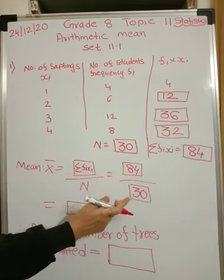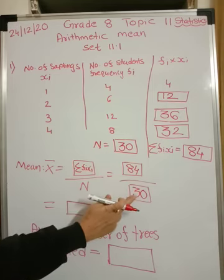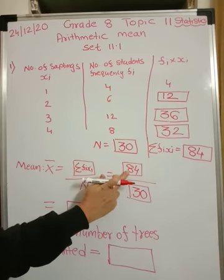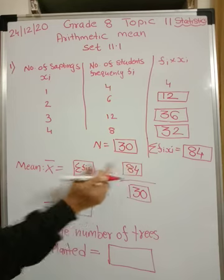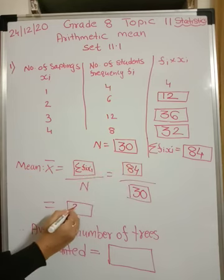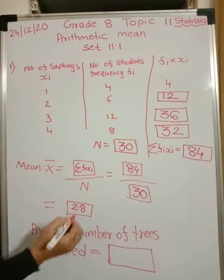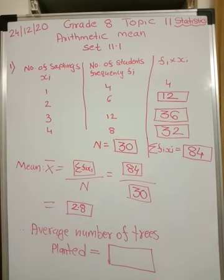If we calculate this, 84 is divisible by 3. 3 2's are 6 and 8's are 24. So 28 upon 10. It comes out to be 2.8. So average number of trees planted by each child you can say approximately 2.8 saplings.